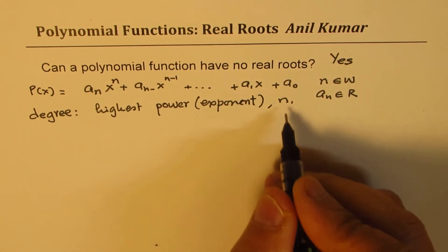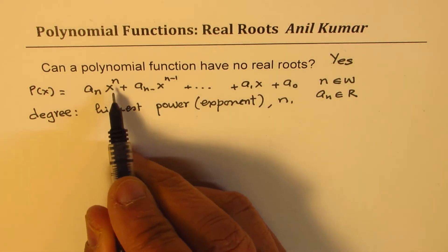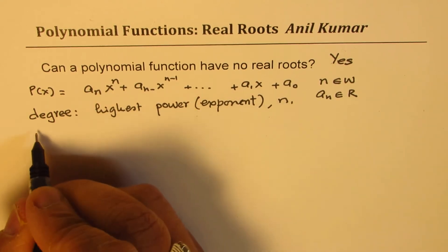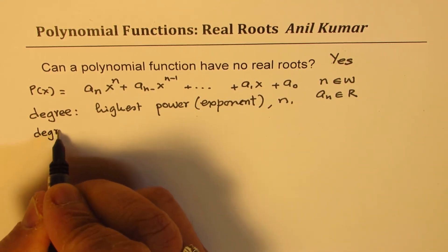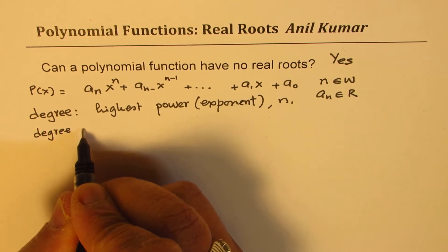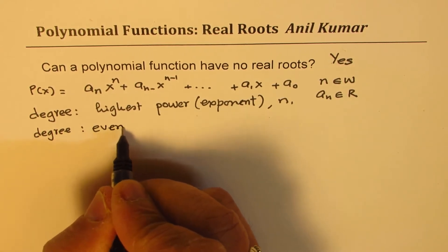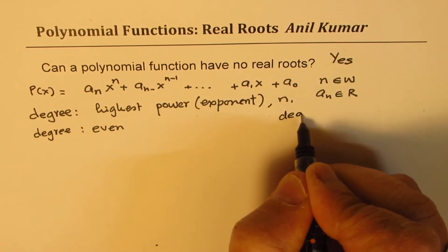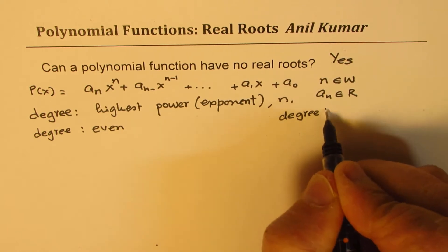Now this degree n could be an even number or an odd number. So we could have a degree which is even and we could have degree which is odd.